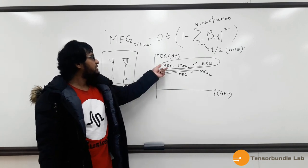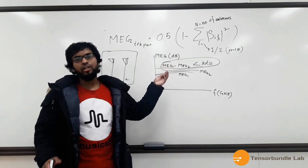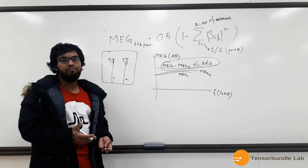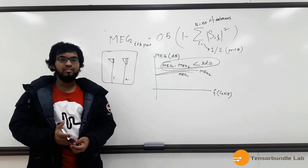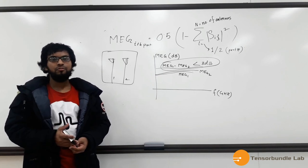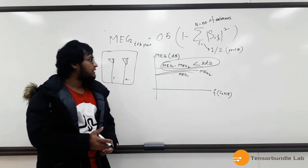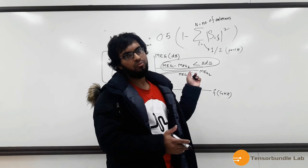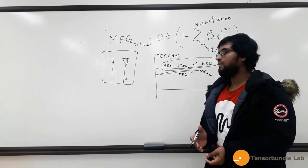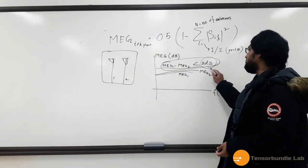So basically, the mean effective gain is nothing but a measure of the received power level of a diversity antenna or MIMO antenna to that of an isotropic radiator. And the difference between the MEG of the ports of the MIMO antenna should be always less than 3 dB.